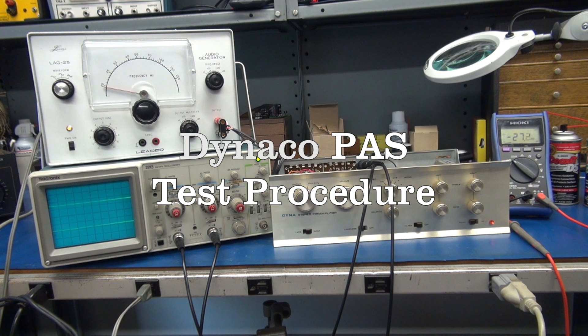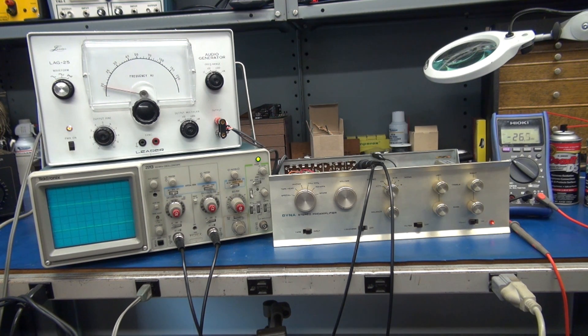Here is a test procedure for the Dynaco PAS preamps after repair by D-Lab Electronics. Equipment required: you're going to need an audio generator. In this case I am using a LIDER LAG25, an oscilloscope, I have a Tektronix 2213, and then a multimeter to monitor DC on the power supply and the output jacks.